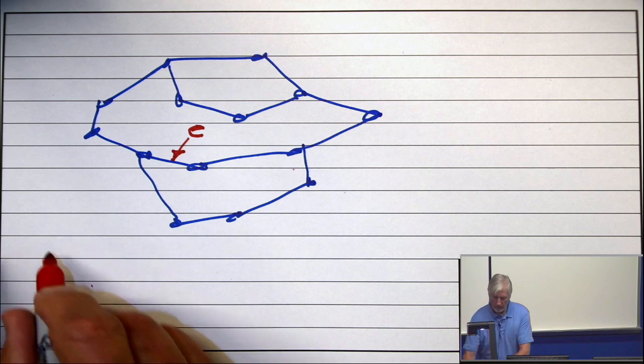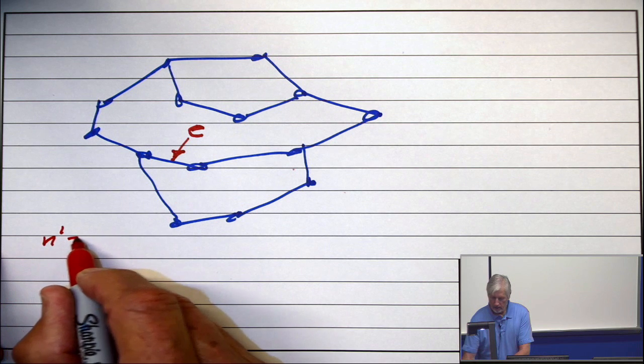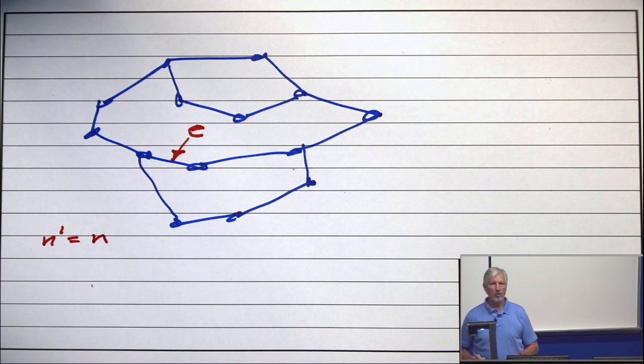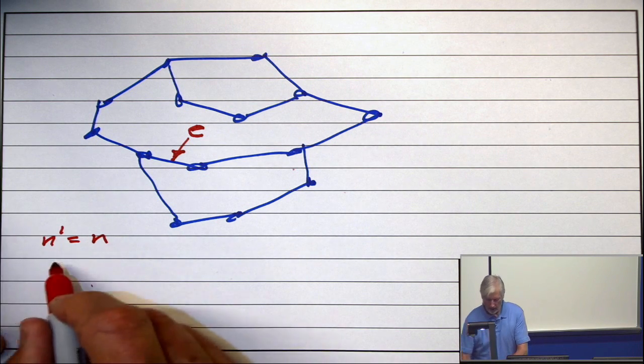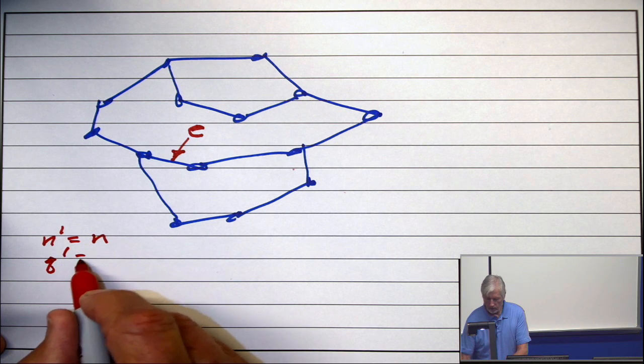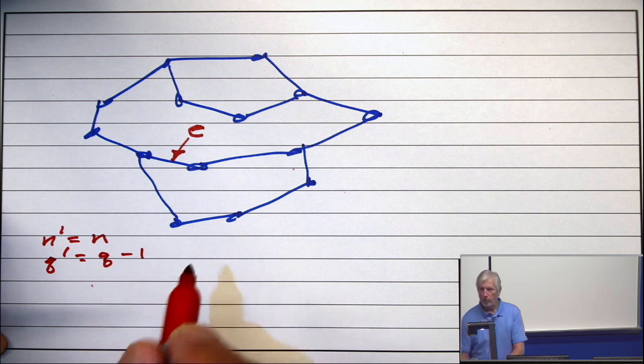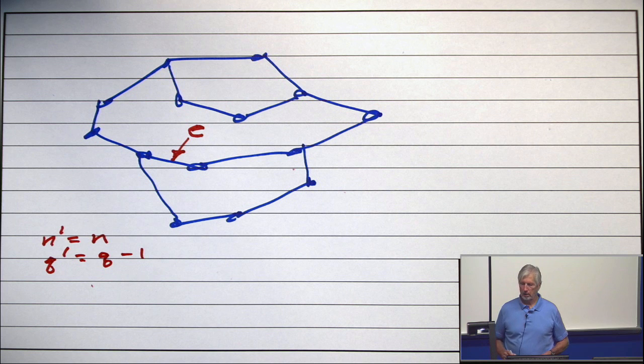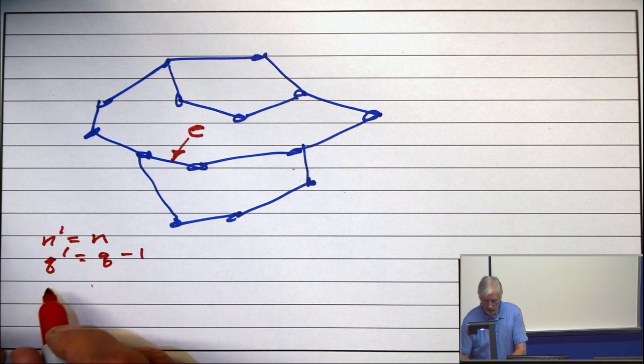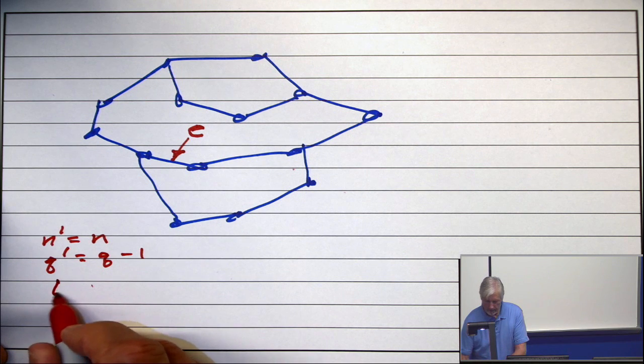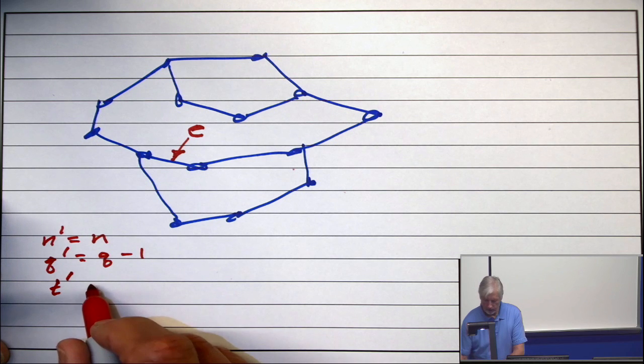So, N prime, the number of vertices didn't change. Q prime is the old Q minus 1. What is T prime? It's the same as T.